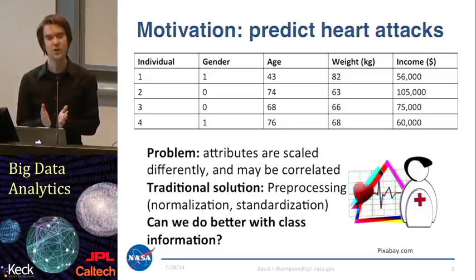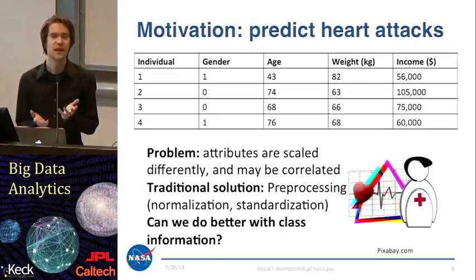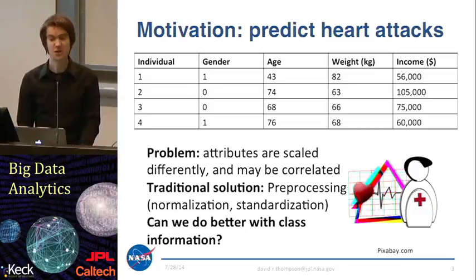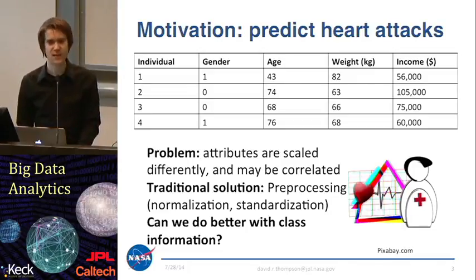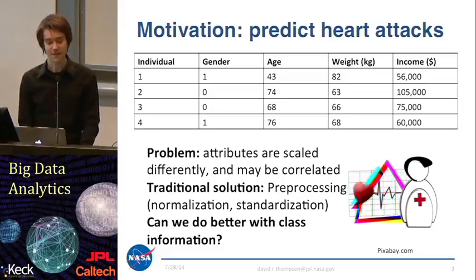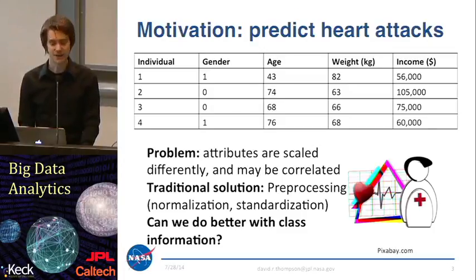One thing to note about this particular formulation is that all of these different attributes have wildly different scales. Income could differ widely by thousands, whereas weight is probably going to differ by tens at most, and age maybe by just 10 or so years. Gender is never going to differ by very much at all. These attributes all have different scalings in this input space, so if we just throw our standard pattern recognition or dimensionality reduction algorithms at this, they might be unduly influenced by a feature like income, which is going to have very high variance relative to the others.